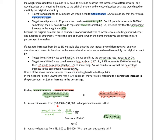The amount of increase from $30,000 to $31,500 is $1,500. The original salary is $30,000. Setting 1,500 over 30,000 equal to X over 100, we cross-multiply and solve to get X equals 5. So this is a 5% increase.